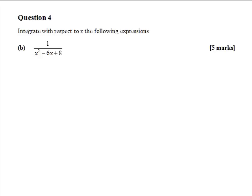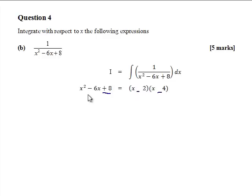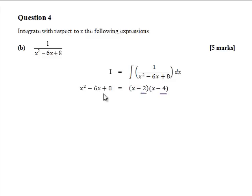Part B: we have to integrate 1 over x squared minus 6x plus 8. Let's factorize the denominator. We put our brackets, put the x's in, and 2 and 4 are obvious factors of 8. Since the 8 is positive the two signs must be the same, and since we need minus 6x they're both minus. We get x squared, minus 2x and minus 4x giving minus 6x, and minus 2 times minus 4 gives plus 8. So the denominator factorizes as (x minus 2)(x minus 4).